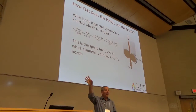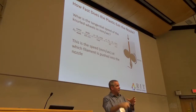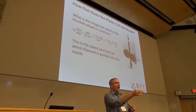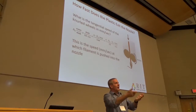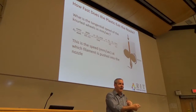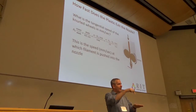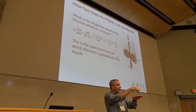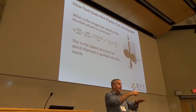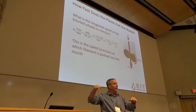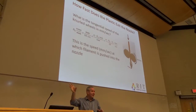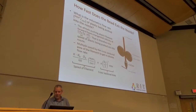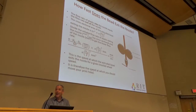Turning those calculations around: knowing the volumetric flow rate exiting the nozzle and the nozzle diameter — which is smaller than the filament diameter — you can calculate the exit velocity of plastic. That velocity must roughly match the speed you're moving the print head. These are real calculations that go into the firmware code running these simple 3D printers, not just engineering exercises. Sample calculations work through how fast you actually have to print.